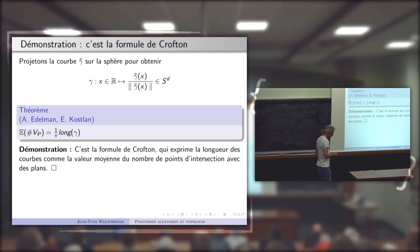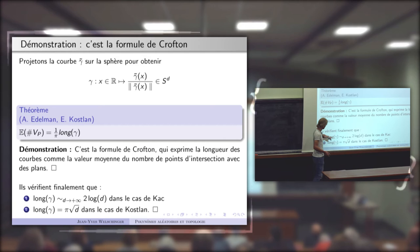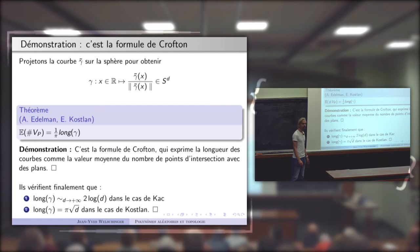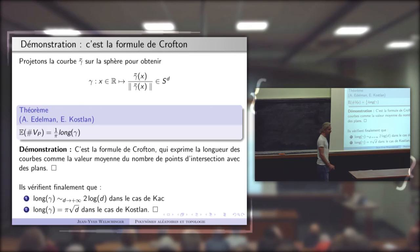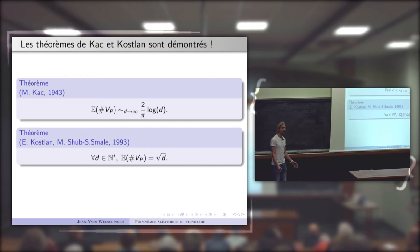Cela démontre les résultats, car la fin de la démonstration consiste à calculer la longueur de la courbe. Dans le cas de Kac, c'est une intégrale peu sympathique, mais on peut en extraire l'asymptotique : 2/π · log(d). Dans le cas de Kostlan, c'est très facile : la longueur vaut π√d, quel que soit le degré. On obtient ainsi les deux résultats énoncés.